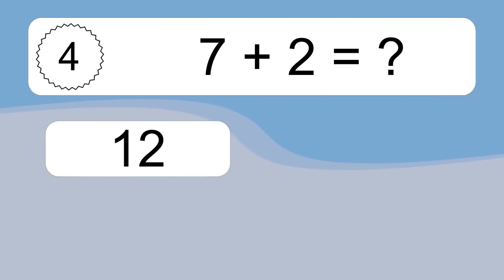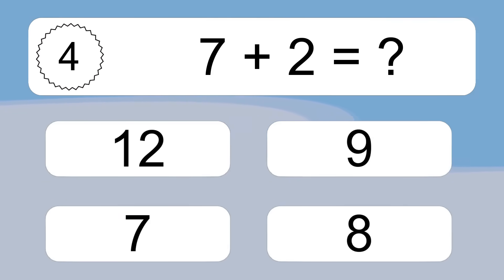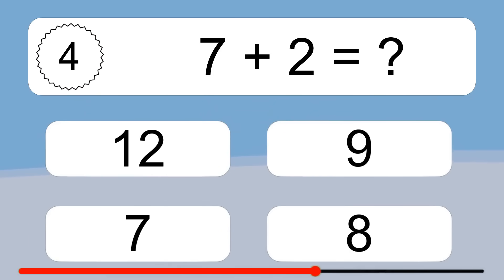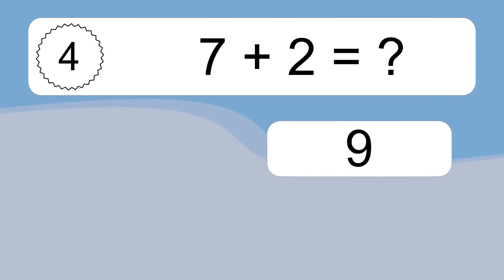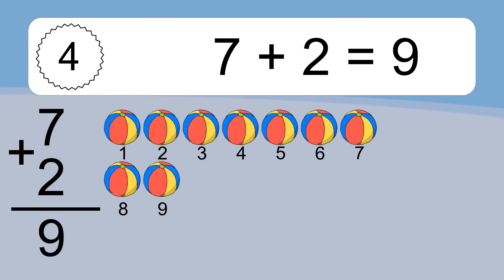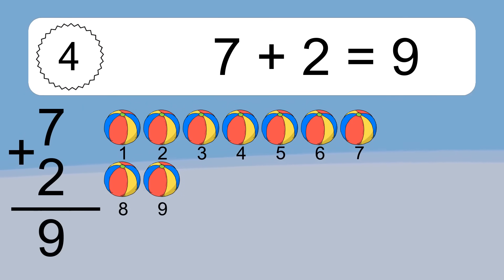7 plus 2 equals what? 7 plus 2 equals 9. Let's count it. 1, 2, 3, 4, 5, 6, 7, 8, 9.